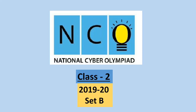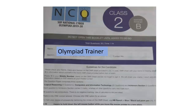Welcome to our channel Olympiad Trainer. In this video, we are going to solve the question paper of NCO, i.e. National Cyber Olympiad Exam for Class 2, Year 2019-20, Set B. The question paper comprises three sections: Logical Reasoning, Computers and Information Technology, and Achievers Section. Each question in the Achievers Section carries two marks whereas all other questions carry one mark each. New users, please subscribe our channel Olympiad Trainer for more such solved question papers.